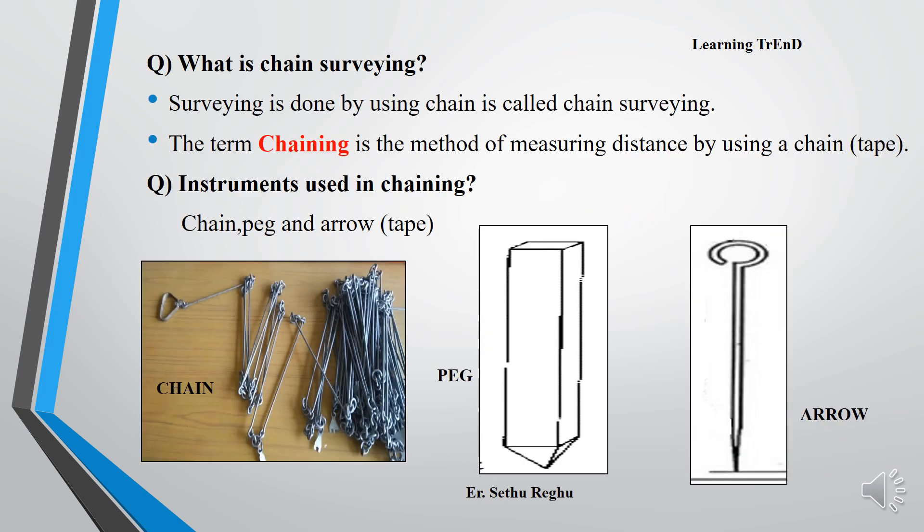What is chain surveying? Surveying done by using chain is called chain surveying. The term 'chaining' is the method of measuring distance by using a chain or tape. Instruments used in chaining are chain, peg, and arrow. The peg and arrow are used as station markers.